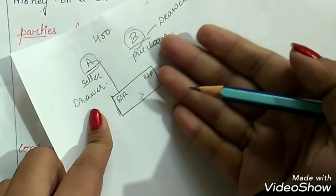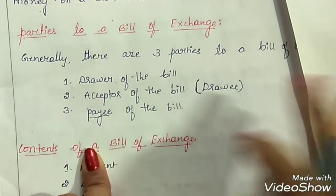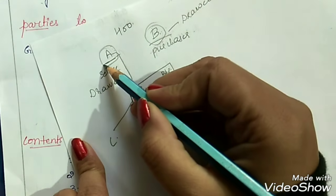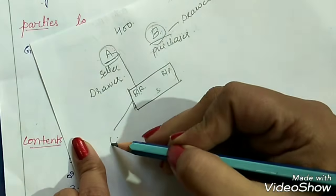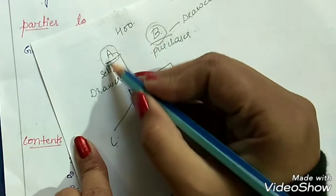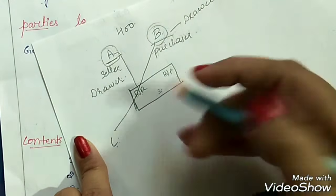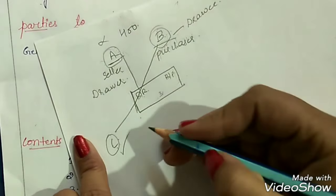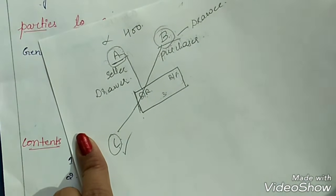So there are at least two parties: the drawer, the acceptor or drawee, and a third party called the payee. The payee is the person to whom the money is to be paid. In most cases, the drawer is also the payee — A is the payee because B will pay the amount to A. However, the payee may change in some cases. For example, if A transfers this bill to another person C, then B will directly pay C, making C the payee.